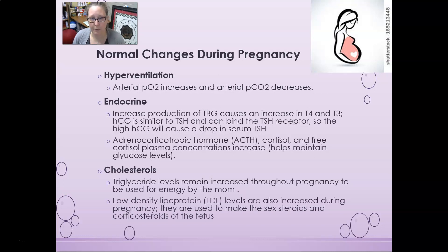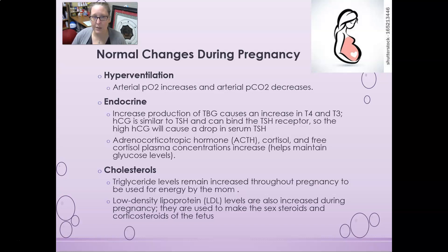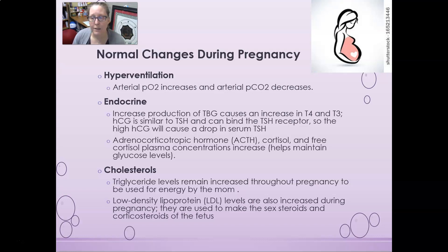There will be some hyperventilation in the mom — arterial PO2 will increase and arterial PCO2 will decrease, probably to increase oxygenation to the baby. In the endocrine system, there will be increased production of thyroid binding globulin, which causes an increase in T4 and T3, meaning an increase in mom's metabolism.